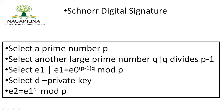The first step is key generation. The first thing we have to do is select a prime number, which is usually of length 1024 bits. You are supposed to select a prime number which is 1024 bits in length — approximately 2 to the power of 1024.